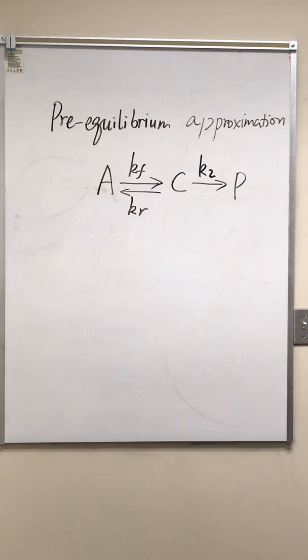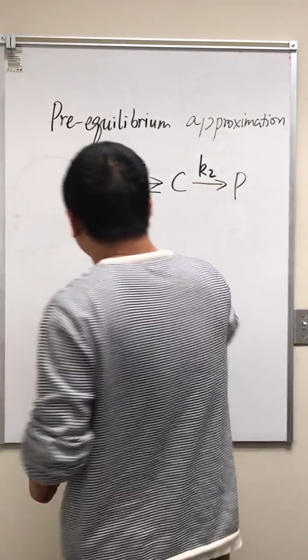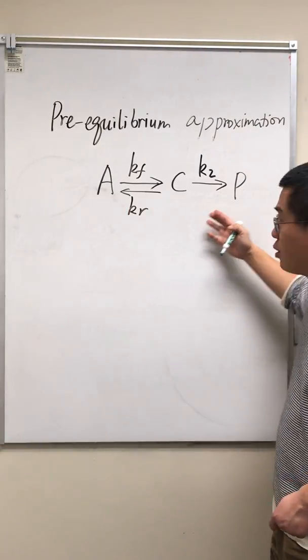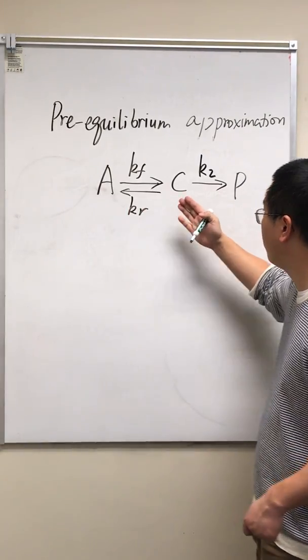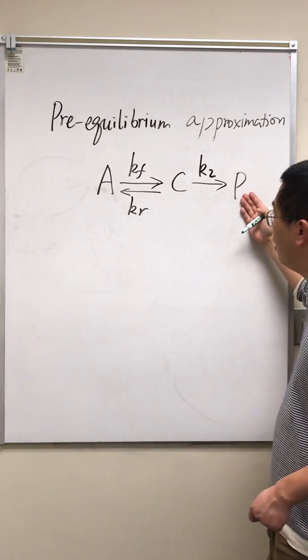I will explain this pre-equilibrium approximation here. Let's say we have a complex mechanism from A to C and from C to P.